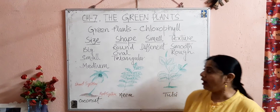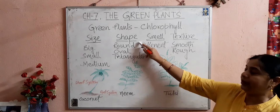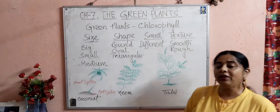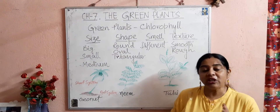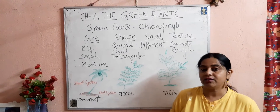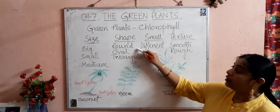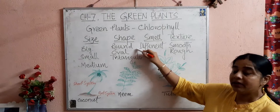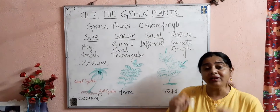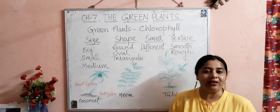The shape of the leaves also differs from plant to plant. Some leaves have a round shape, some are oval shaped, and some have a triangular shape. All of you know this very well.